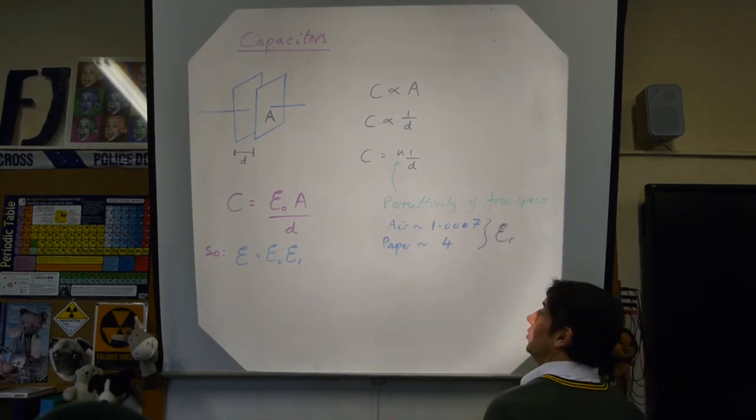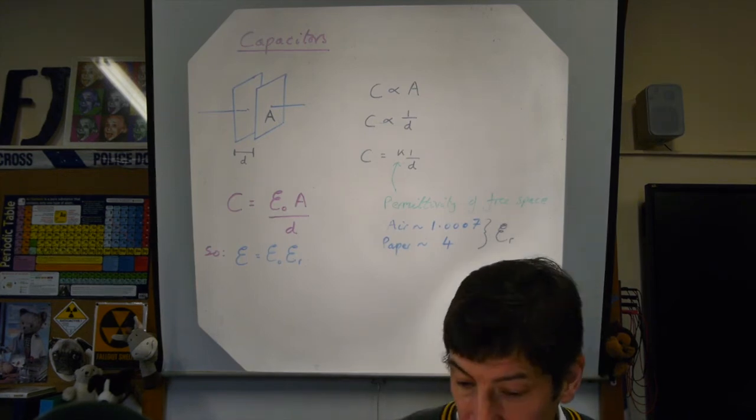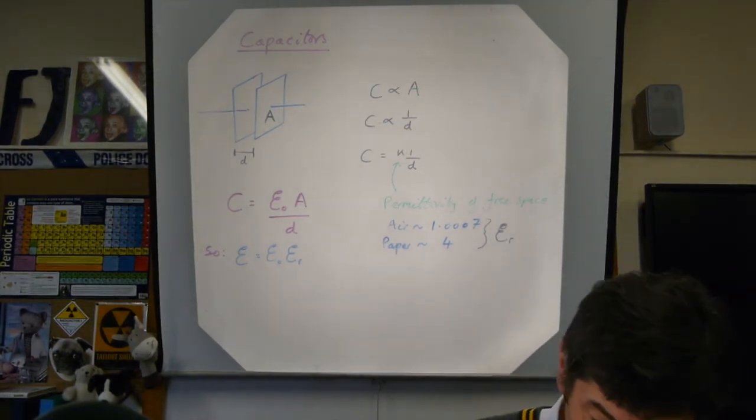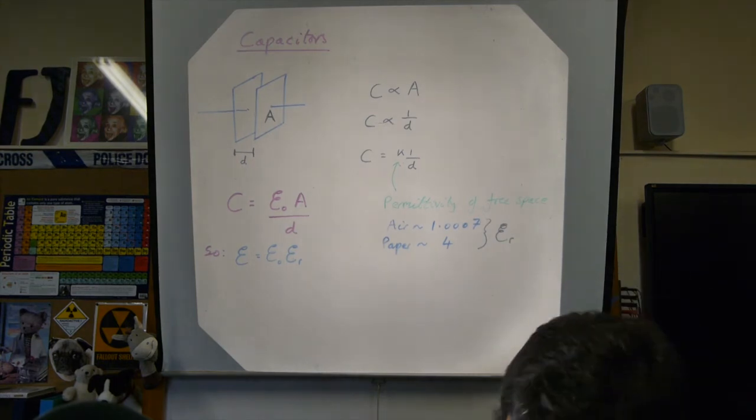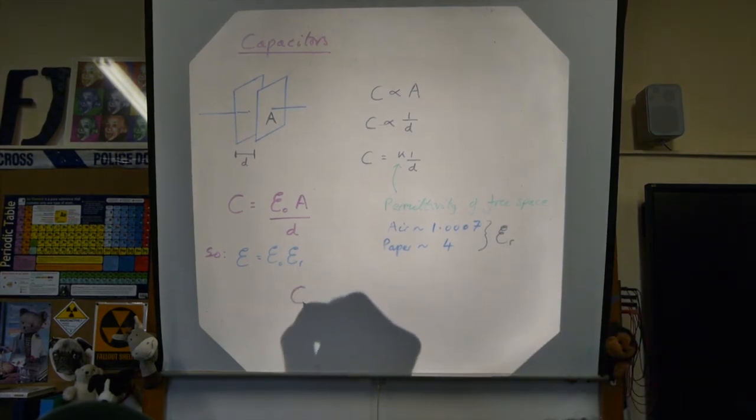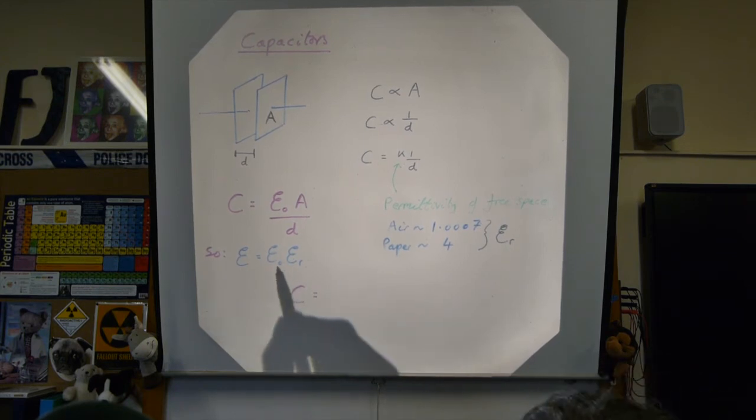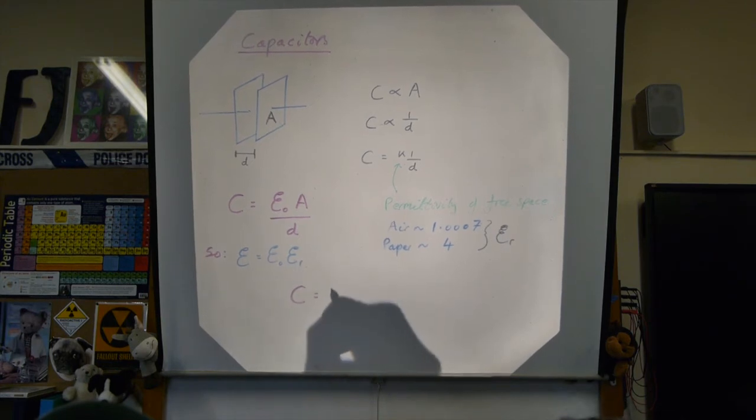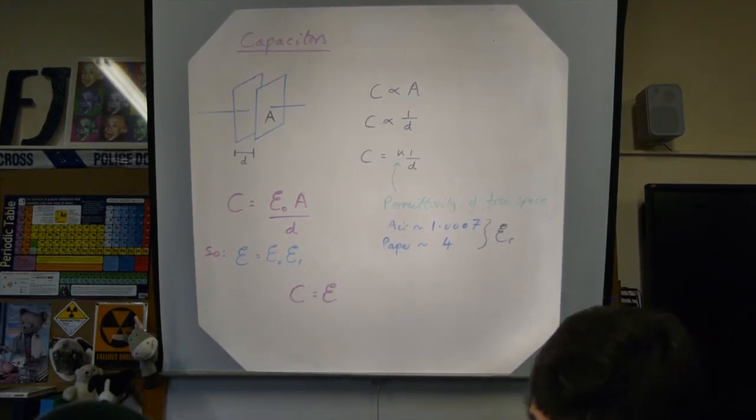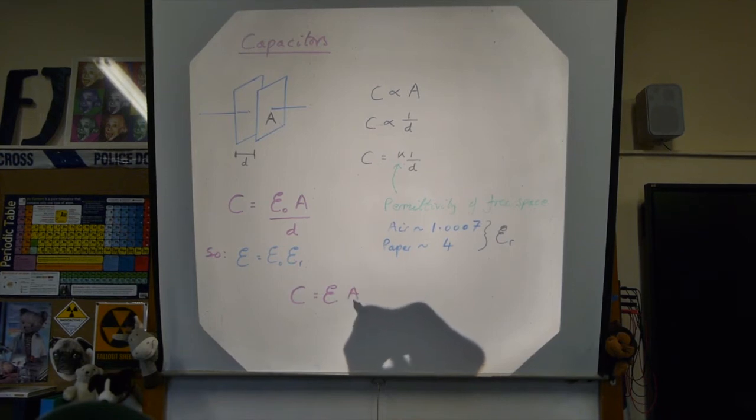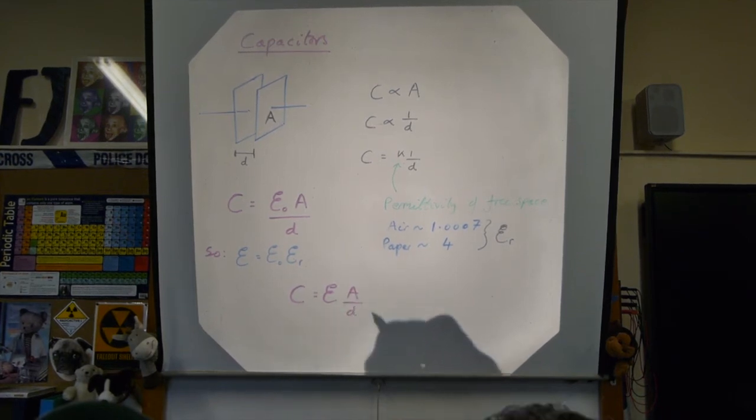So for a parallel plate capacitor that you might build, we're now in the situation where the total permittivity, and we'll call that epsilon just on its own, is going to be equal to epsilon naught, whatever that value is, well you know that value, that's a fixed quantity, so 8 times 10 to the minus 12 or thereabouts, multiplied by how much it's made bigger, epsilon r, the relative permittivity of free space.